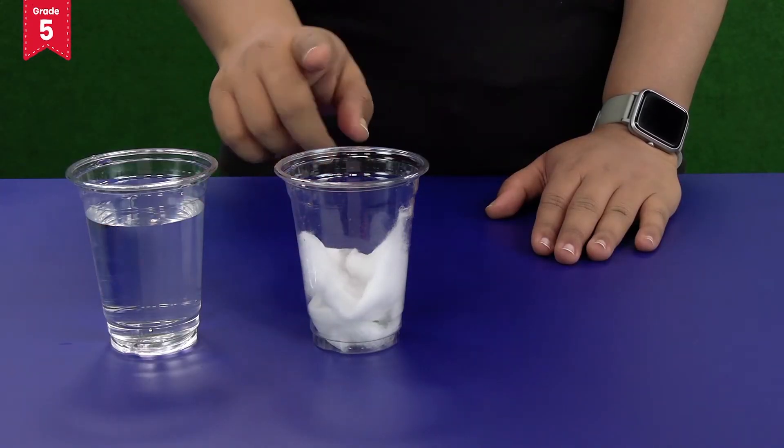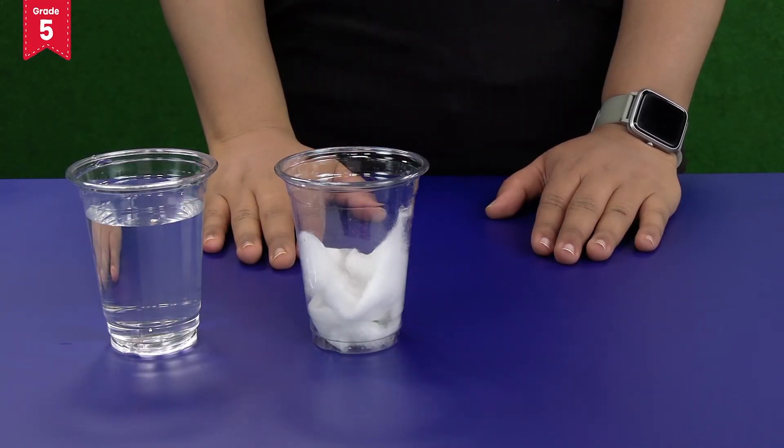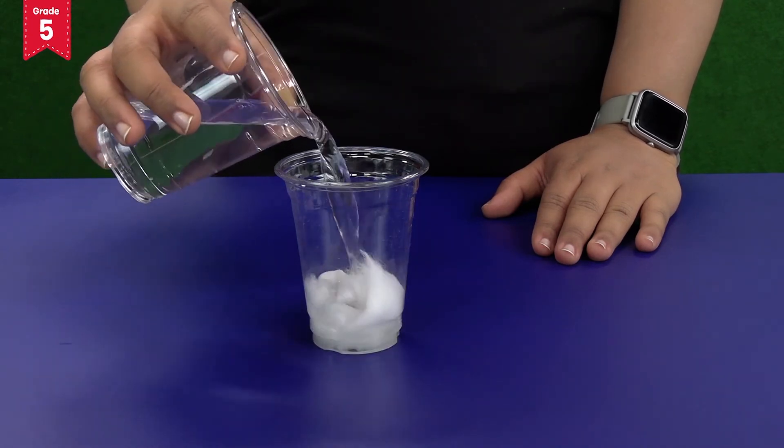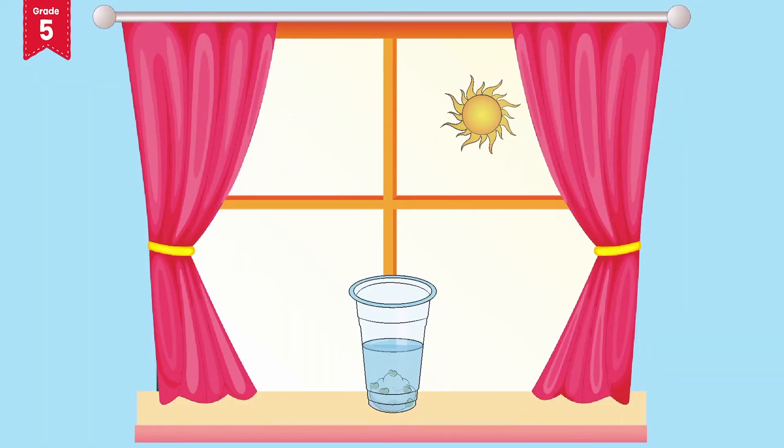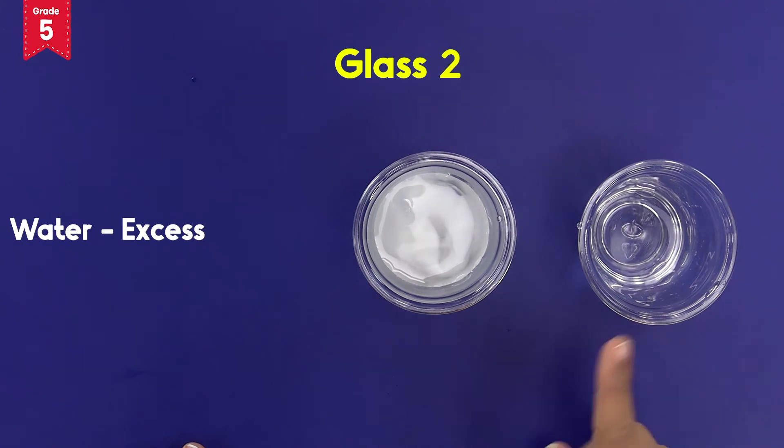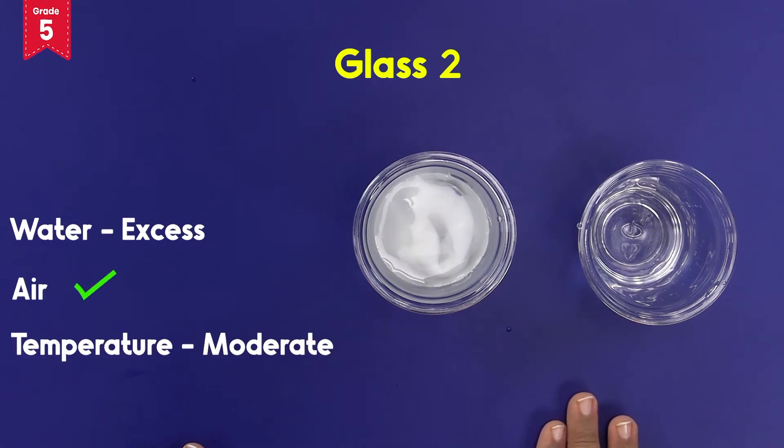Place glass 2 near a window which receives sunlight and add a cup of water to it such that the seeds are completely submerged in water like this. We are providing excess water, air and moderate temperature to the seeds in glass 2.